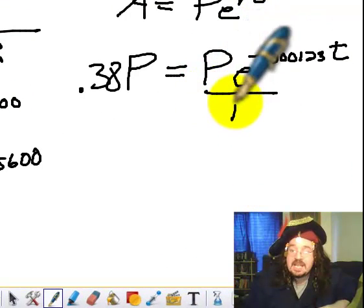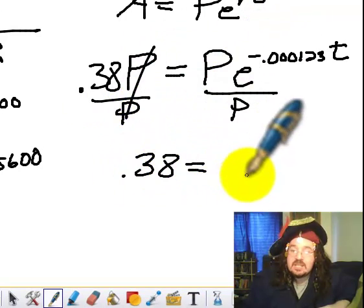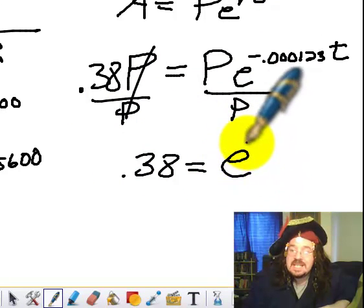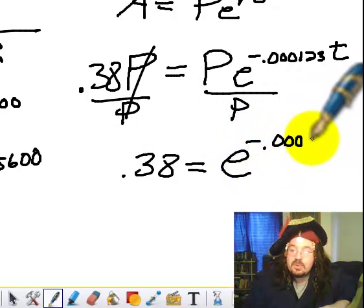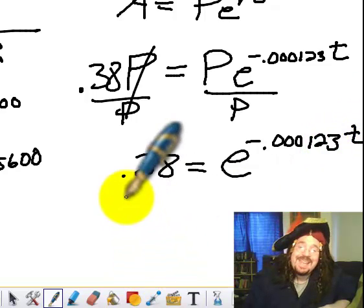And I get 0.38. And here I just have an e to the negative 0.000123 times T. And then ln.